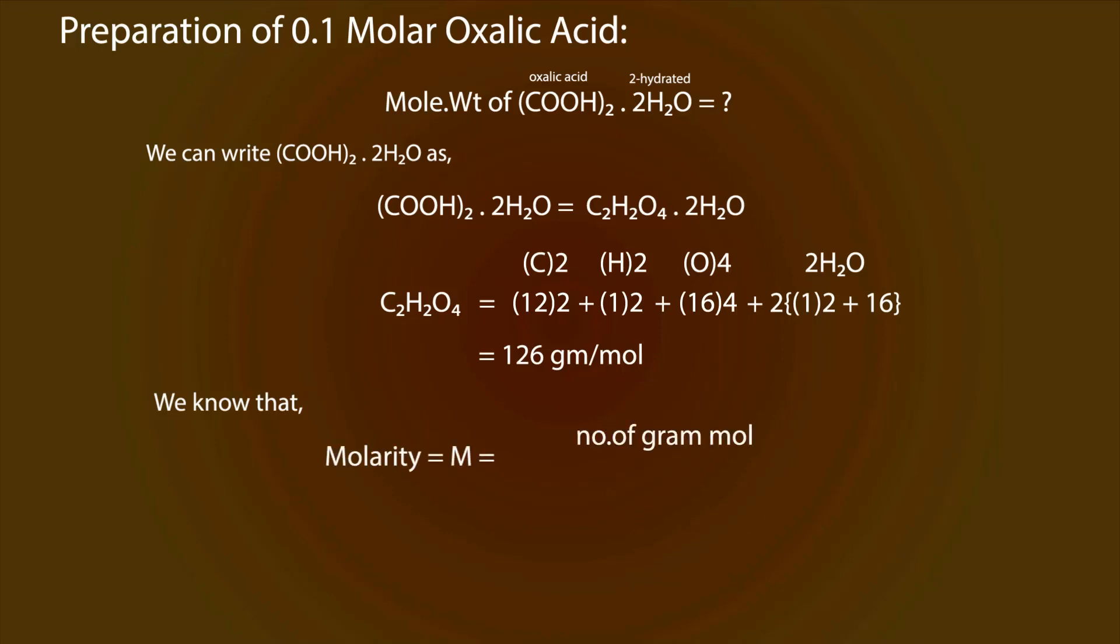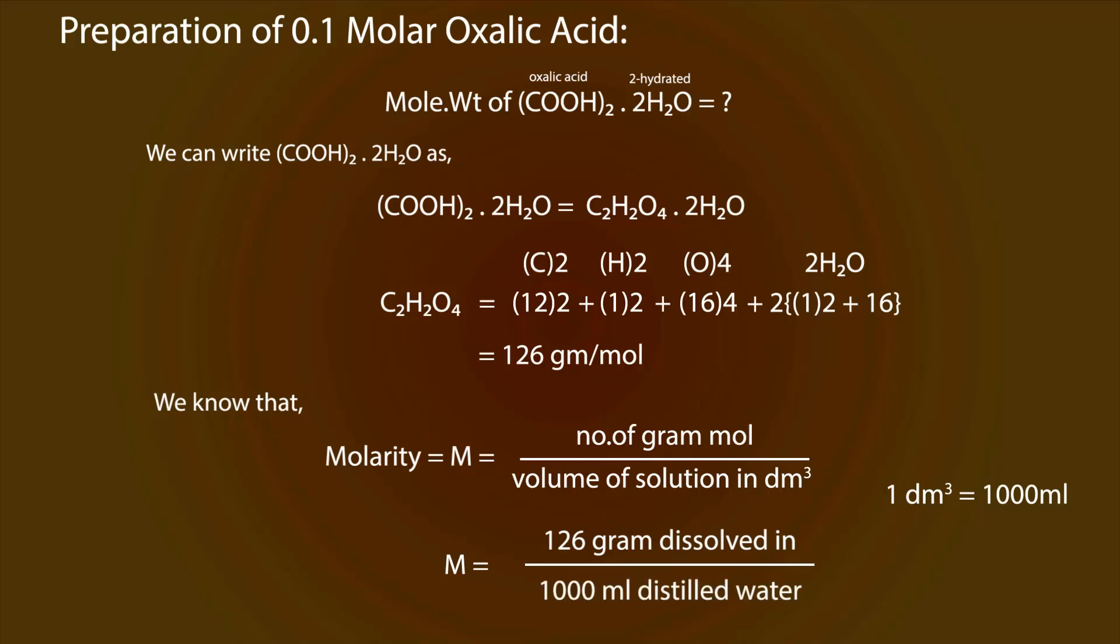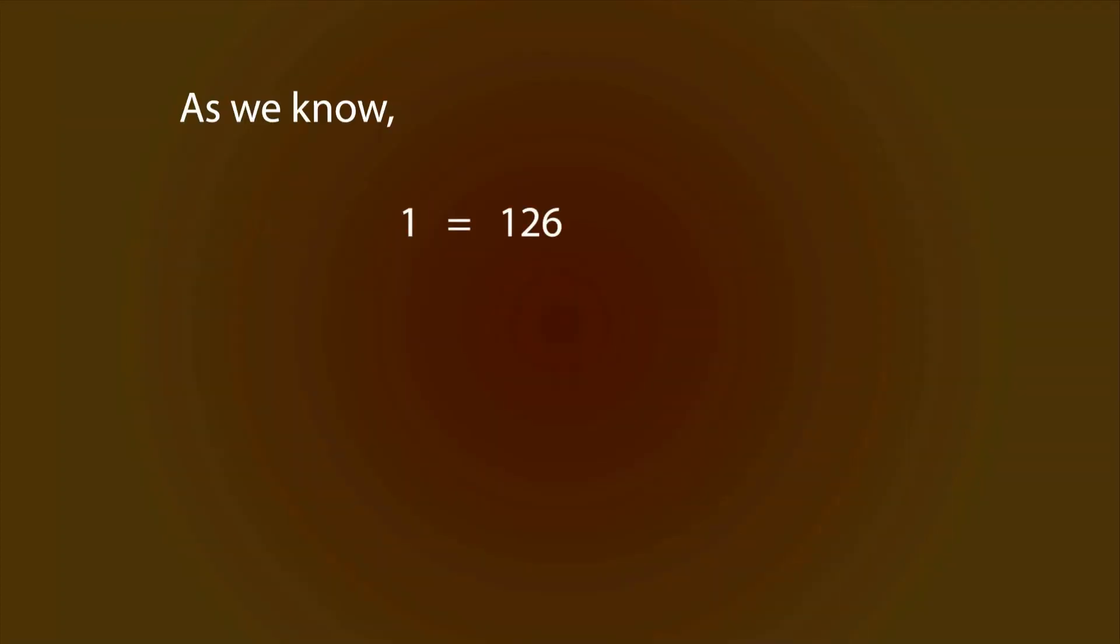And we know that molarity is equal to number of gram moles divided by volume of solution in dm³, and 1 dm³ is equal to 1000 milliliters. 1 molarity is equal to 126 grams of oxalic acid dissolved in 1000 milliliters of distilled water. We also know that for 1 molar we have 126, so for 0.1 molar we must take 12.6 grams.